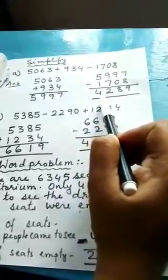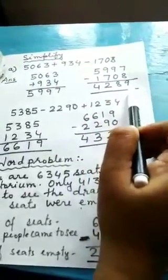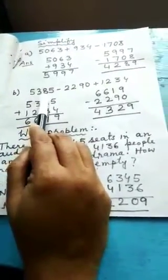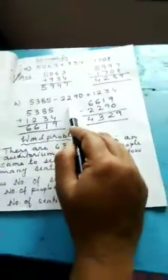Your answer will come 4,289. Our next sum is 5,385 minus 2,290 plus 1,234. How you will do this sum?